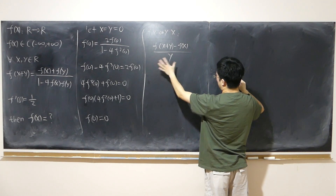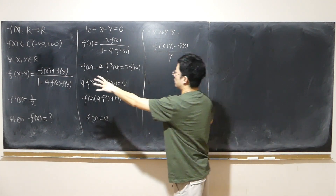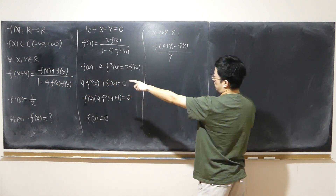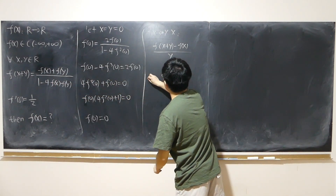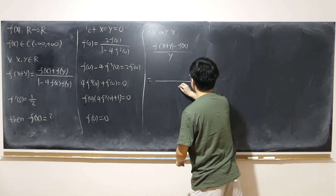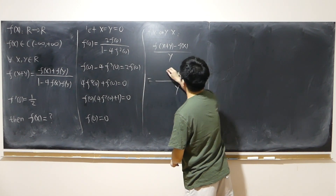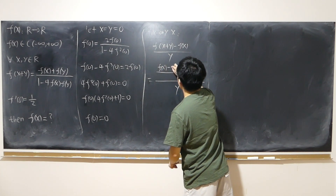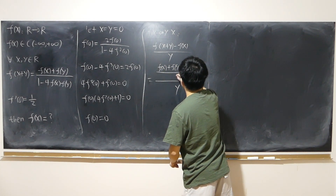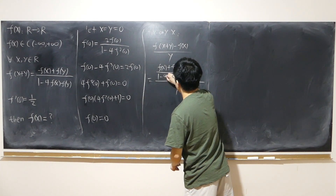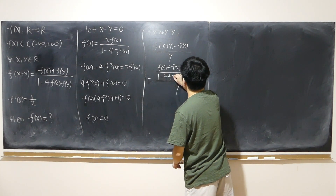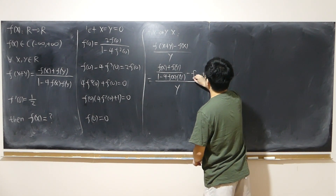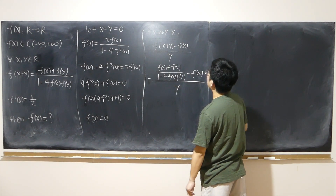According to the given functional equation, f(x+y) equals f(x) plus f(y) over 1 minus 4 f(x)f(y). So substituting into the first-principle expression, f(x+y) minus f(x) over y becomes f(x) plus f(y) over 1 minus 4f(x)f(y), minus f(x), all divided by y.